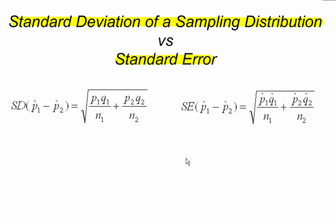Now I'm just going to use the standard deviation and the standard error formulas for the difference between proportions. But this is also true for the standard deviation of a sampling distribution and standard error for single proportions or means or anything else.